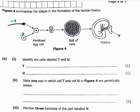Question A2 asks for two ways in which cell T and cell U are genetically similar. One way in which the sperm cell and the egg cell are genetically similar is that they both have the same number of chromosomes, which is 23 — they are haploid cells. They are also both produced by the same process of gamete formation, which is called meiosis, from germ cells.